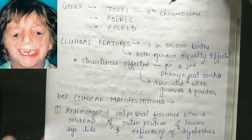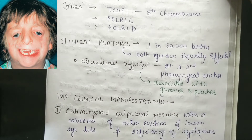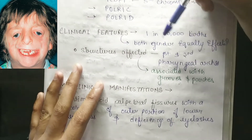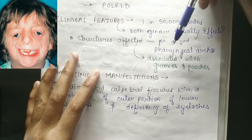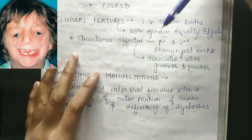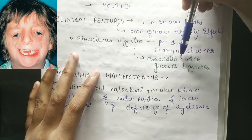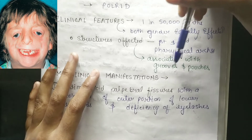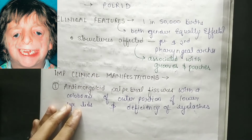In clinical features, it is a very rare condition — one in 50,000 births. Both genders are equally affected. The structures commonly affected are the first and second pharyngeal arches, and it is associated with grooves and pouches.